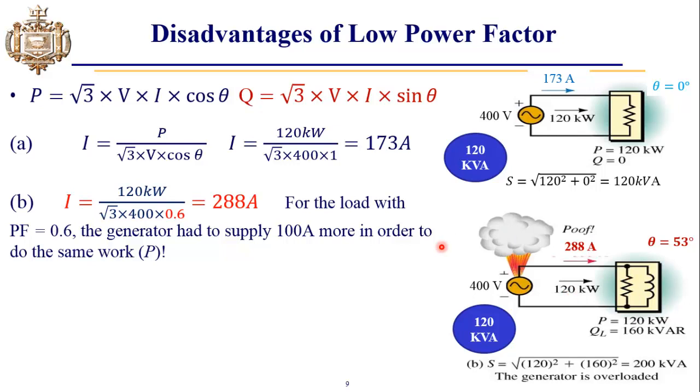So in order to provide this much current, what will be the capacity of the generator? Again we have to compute P and Q. In that case, P comes out to be 120 kilowatts and Q, which is the waste of power, comes out to be 160 kVAR.